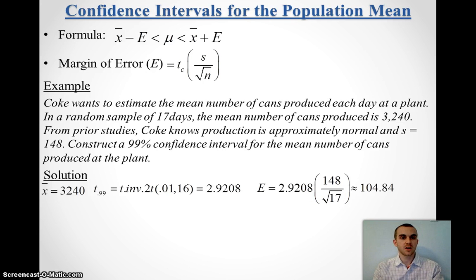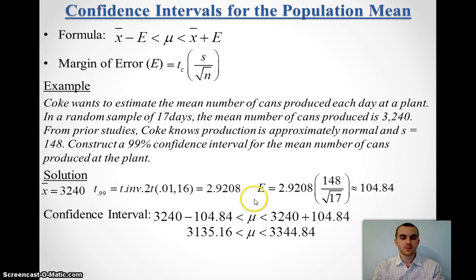Now, I can calculate my confidence interval. I'm going to take my mean, and I'm going to add and subtract my margin of error. And that will give me about 3,135.16, 3,344.84.